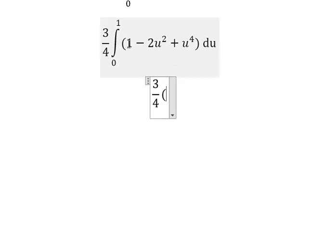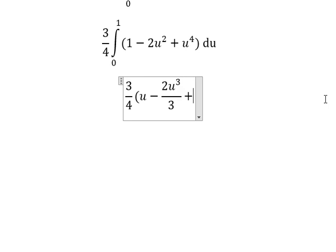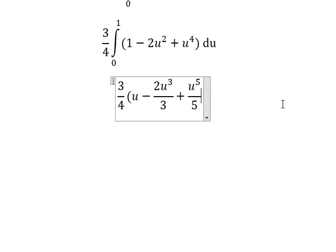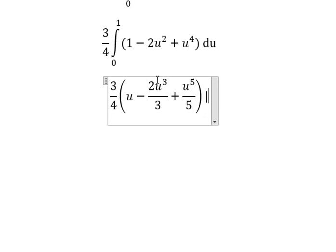The integration of number 1 is u. The integration of u square is 2u to the power of 3 over 3. The integration of u to the power of 4 is u to the power of 5 over 5. And we put the bounds from 0 to number 1.